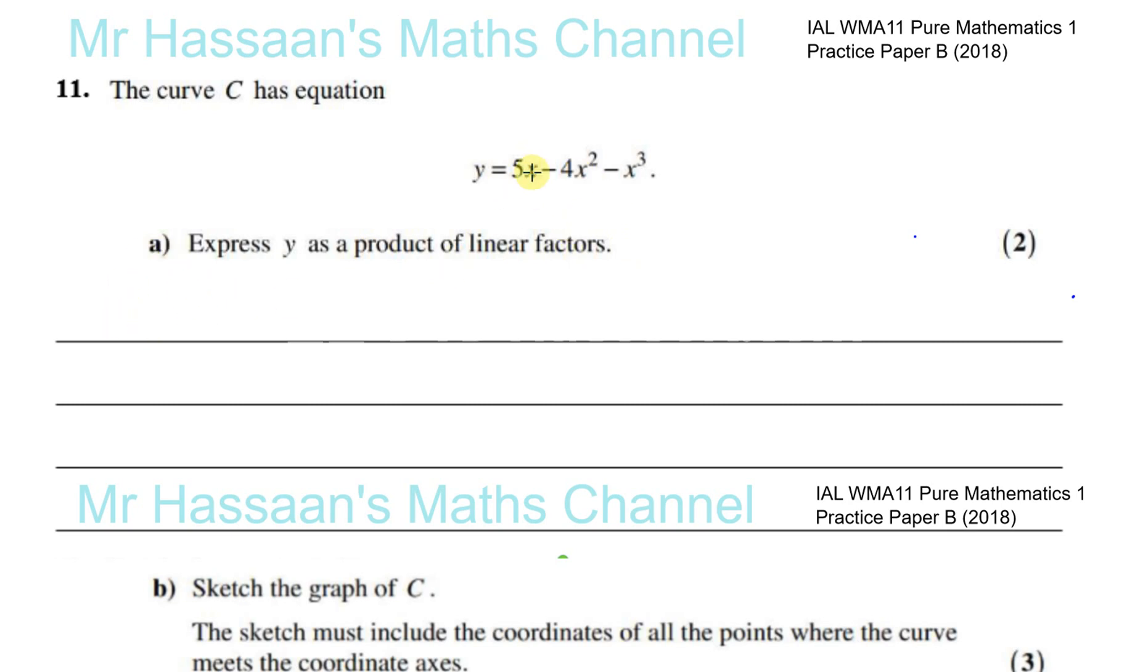Now there's different ways we can do this. First of all, you can see there's a common factor of X in each of these three terms. So you can take out that factor of X and you're left with 5 minus 4X minus X squared. So taking out that factor of X leaves you with 5 minus 4X minus X squared. Now, they've told us that it's going to be a product of linear factors. Here you've got one linear factor and one quadratic factor. So obviously it means you've got to factorize this part of it.